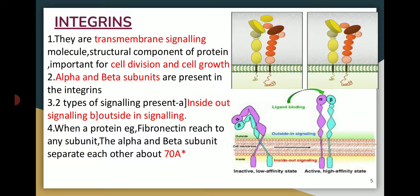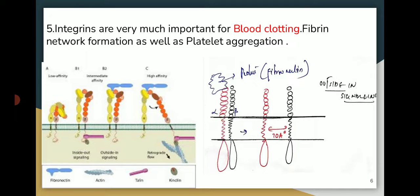Inside-out signaling means something coming from inside towards outside, while outside-in signaling means something coming from outside towards inside. When a protein, for example fibronectin, reaches either the alpha or beta subunit, it triggers a separation of the two subunits. This separation is about 70 angstroms. So how much it has been separated — it is 70 angstroms.